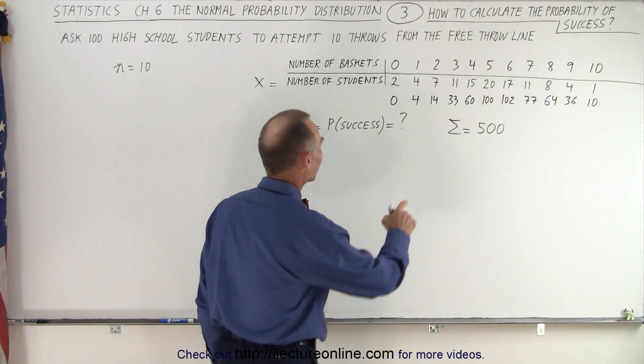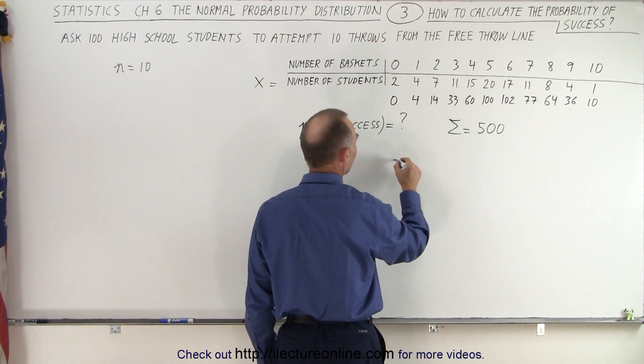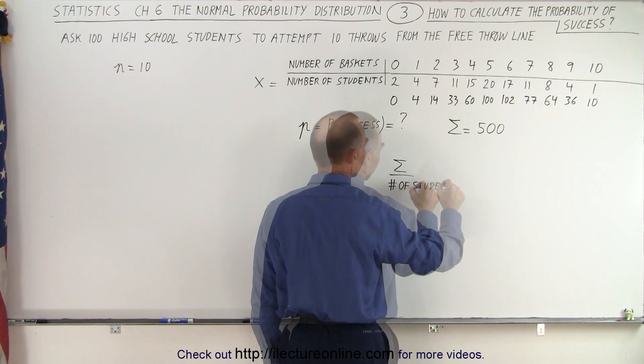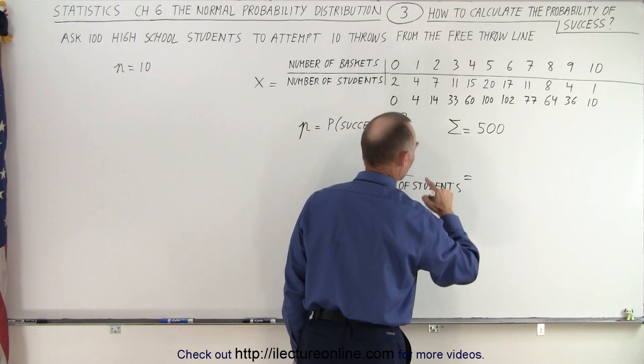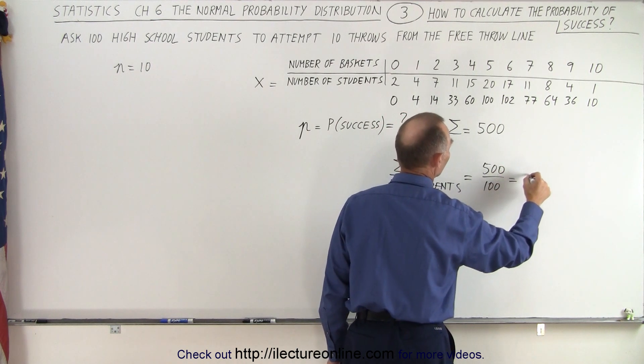So now that we have those all added together, the next thing we're going to do is we're going to divide the sum by the number of students. And that's going to be equal to 500 divided by 100, which is equal to 5.